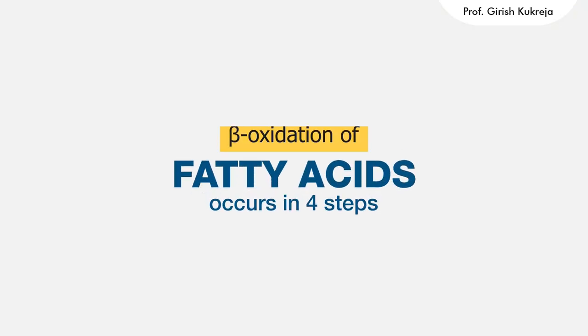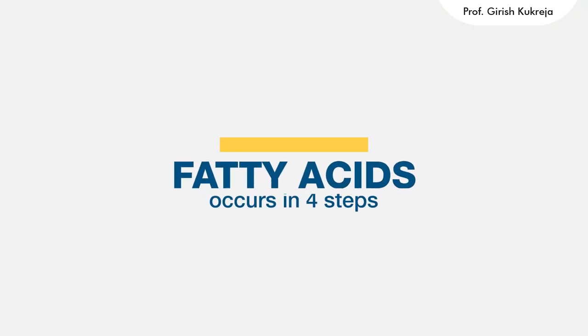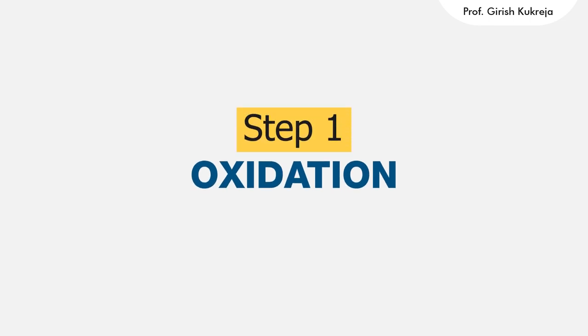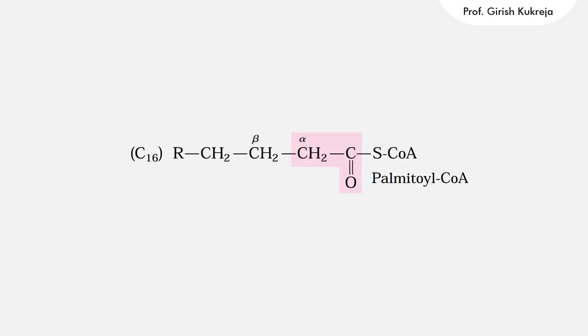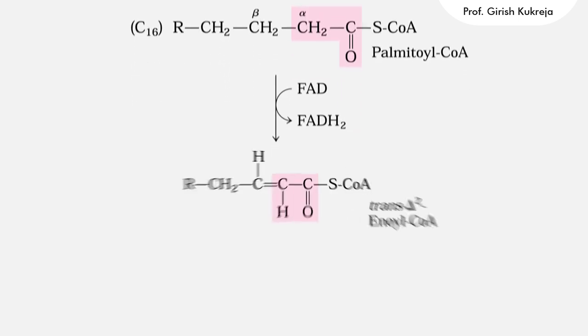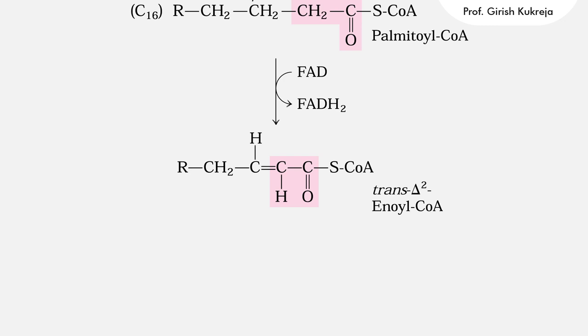The beta oxidation of fatty acids occurs in four steps. Beta oxidation is the first stage of fatty acid oxidation. Step one is dehydrogenation or oxidation. Here the oxidation of fatty acyl-CoA introduces a double bond between the alpha and beta carbon atoms yielding a trans delta 2 enoyl-CoA. This step may be catalyzed by any of the three isoenzyme forms of acyl-CoA dehydrogenase.